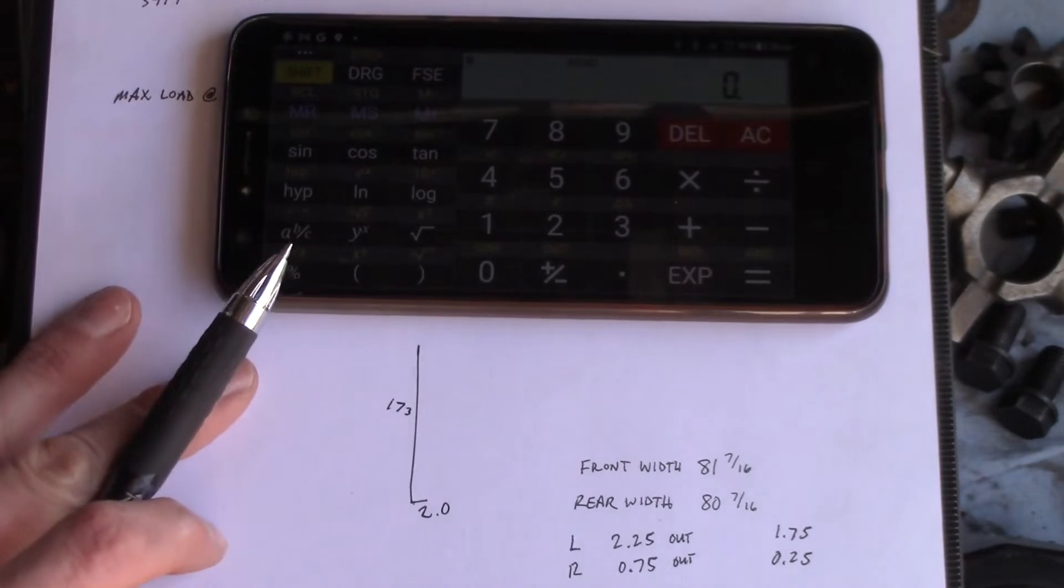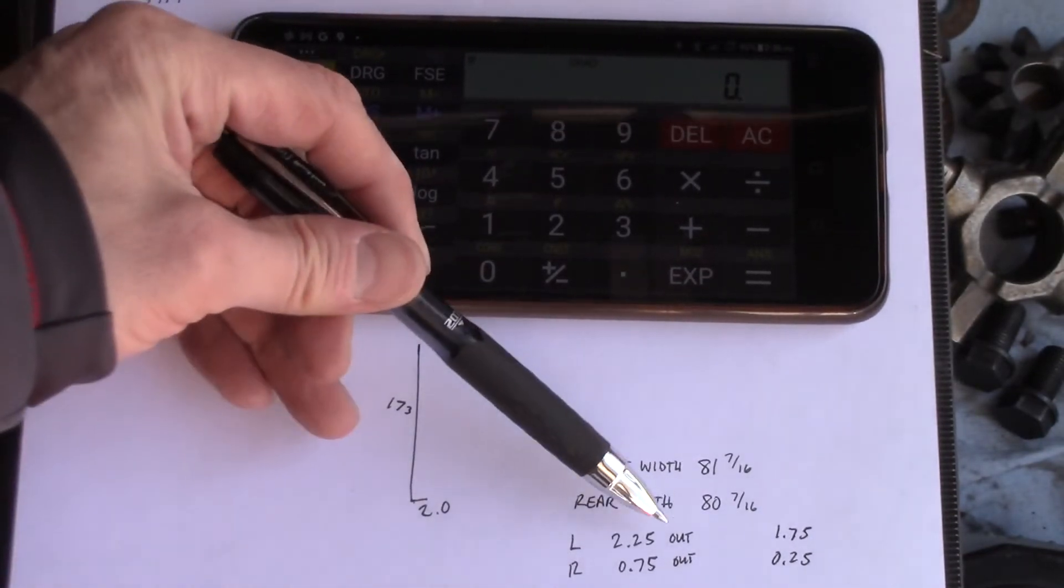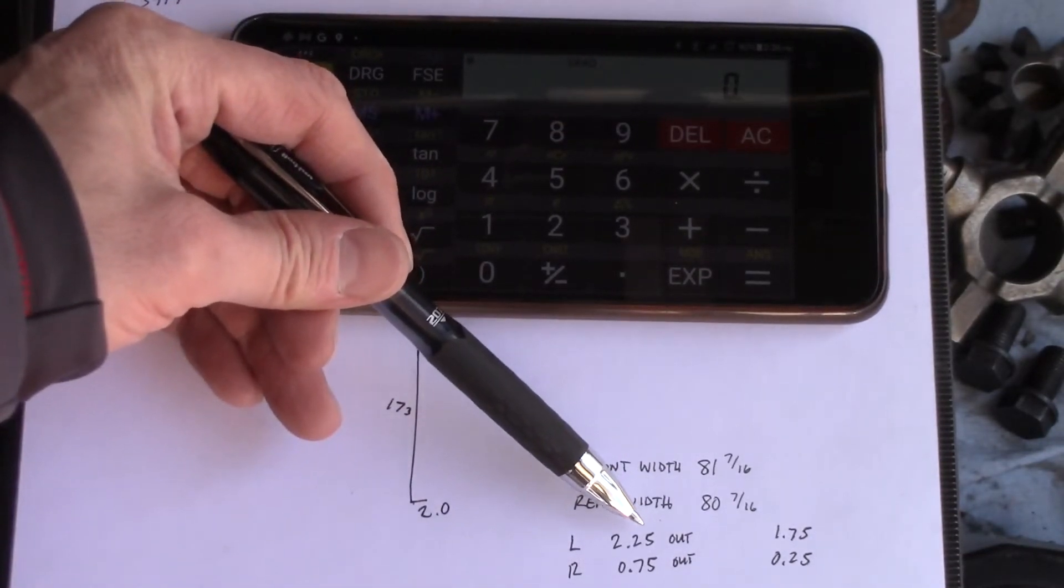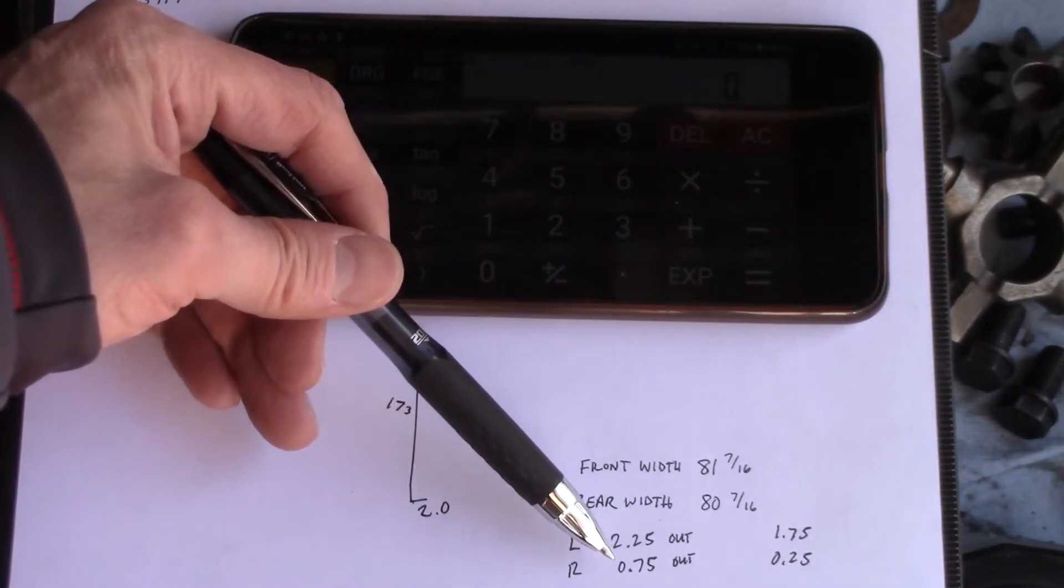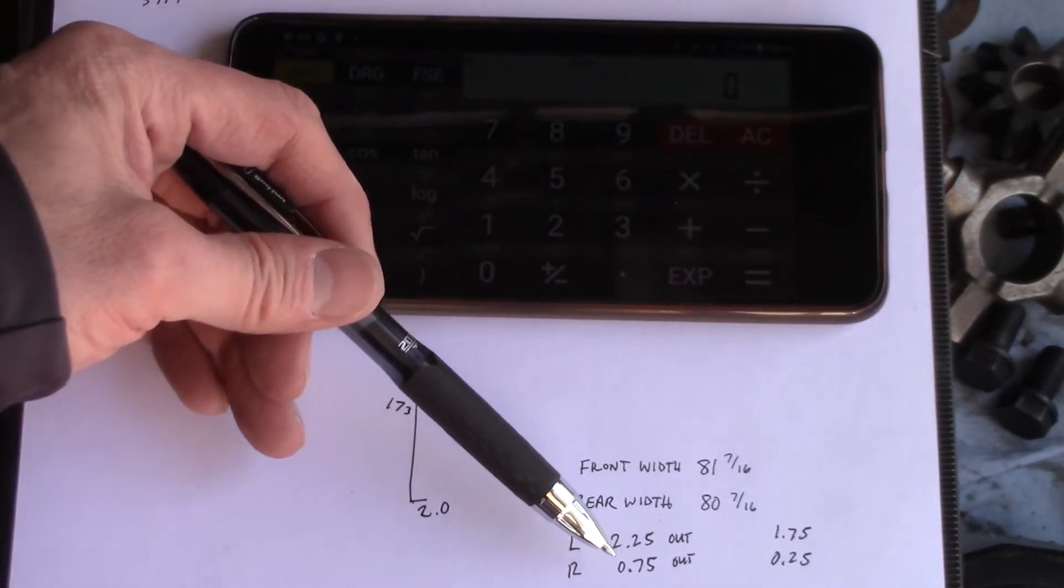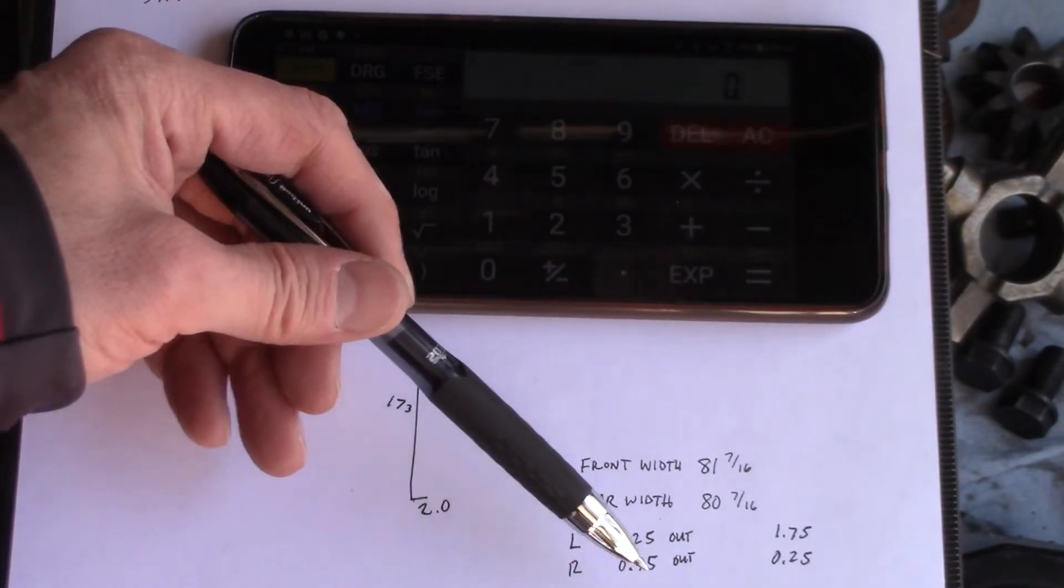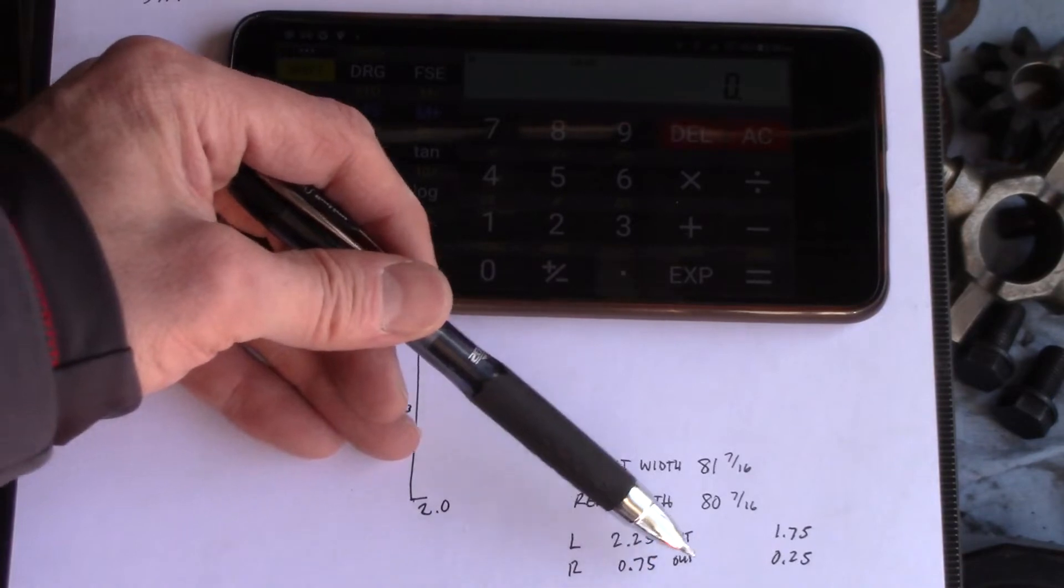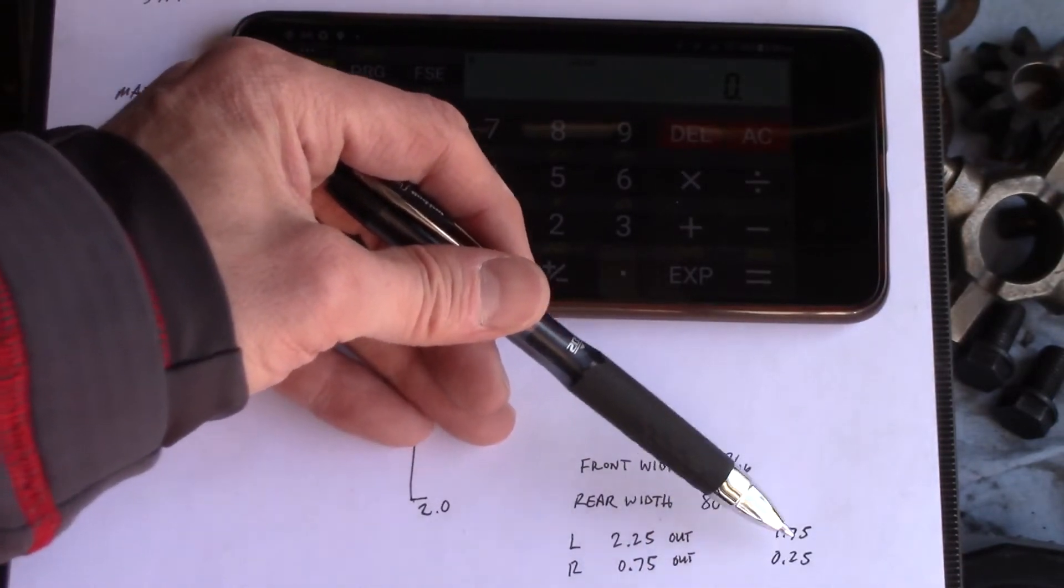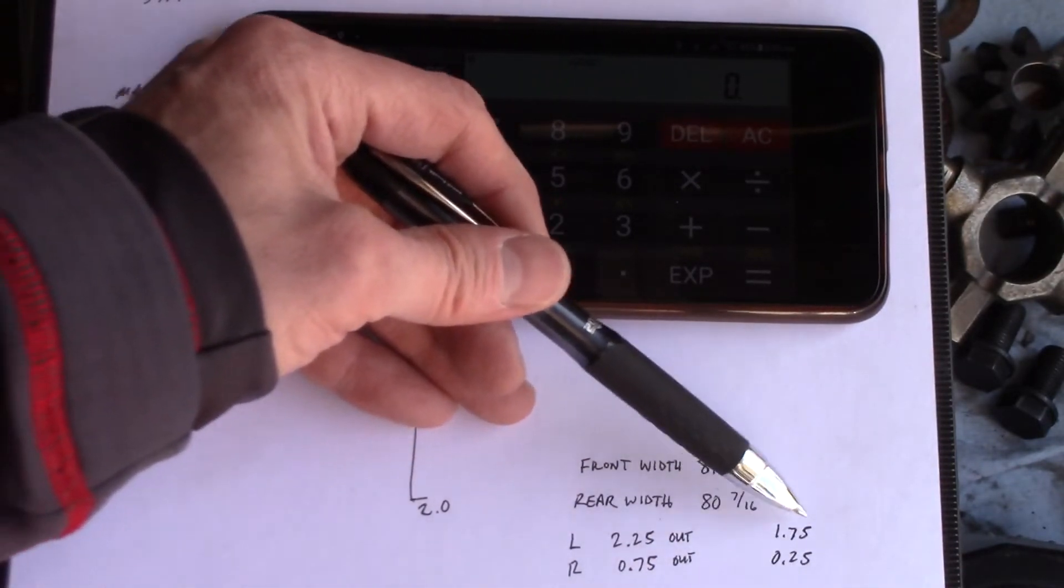Okay, now it's time for a little math. On the back end of the truck we had a left side 2.25 inches out from our mark, the right side 0.75 inches out from our mark. We were expecting a half inch out as zero degrees, so subtract a half from each of these—you get 1.75 and 0.25.